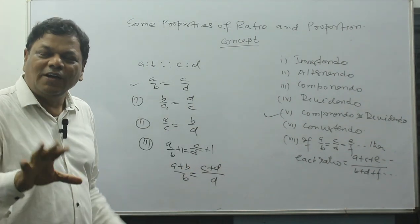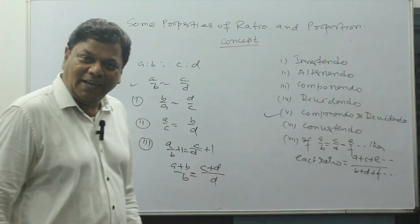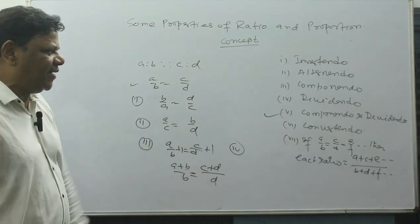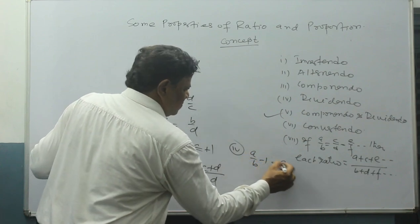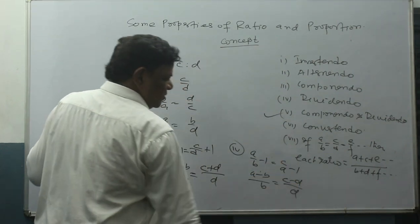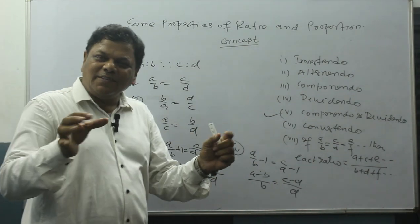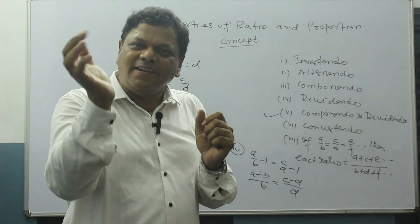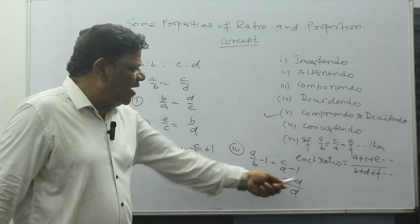For Dividendo, I have to subtract instead of add. In place of plus, write minus. So it becomes (a−b)/b = (c−d)/d. This is called Dividendo. So Componendo means: given a/b, write (a+b)/b on the left and (c+d)/d on the right. Dividendo is the same thing but with minus.